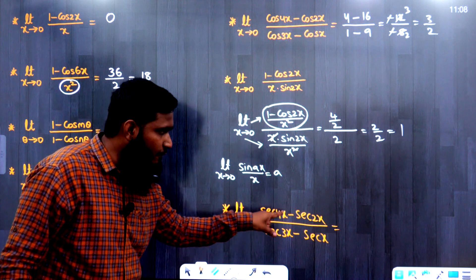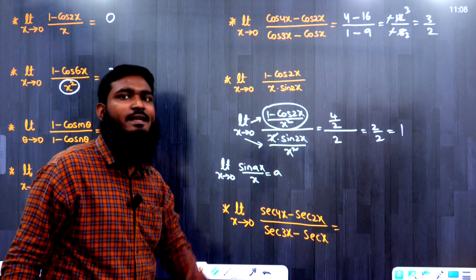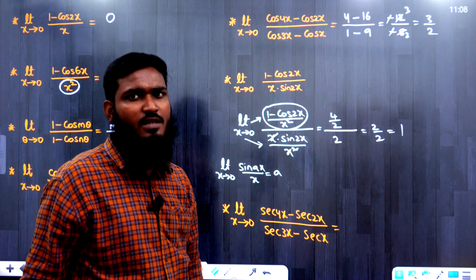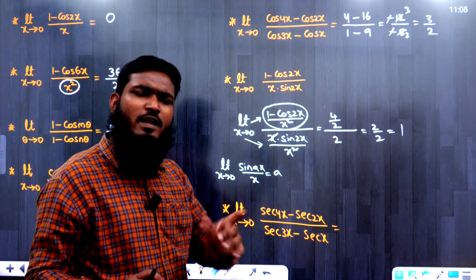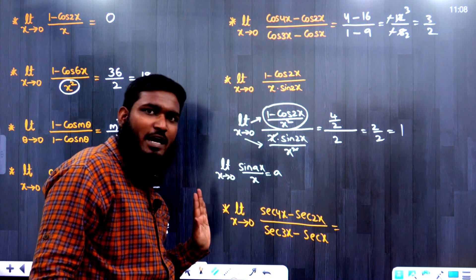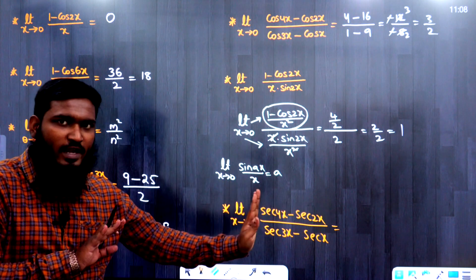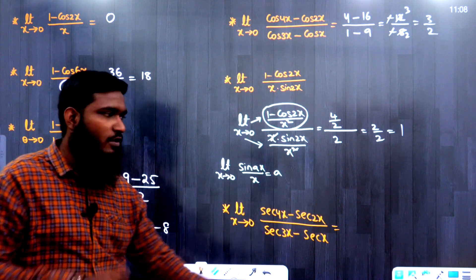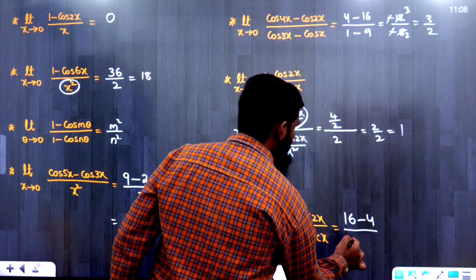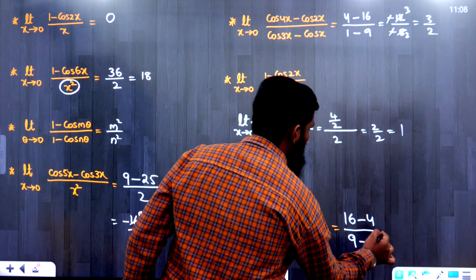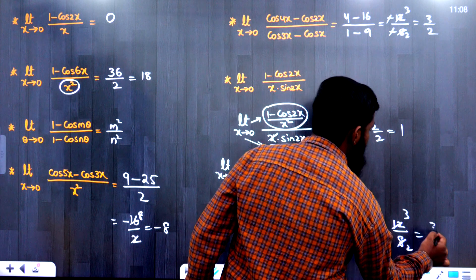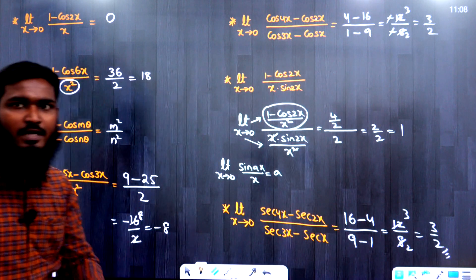Question 7: limit x→0 of (sec4x − sec2x)/(sec3x − secx). Since secant is the reciprocal of cosine, the rule is similar but we go left to right instead of right to left. Numerator: 4² − 2² = 16 − 4 = 12. Denominator: 3² − 1² = 9 − 1 = 8. Answer = 12/8 = 3/2.